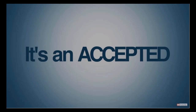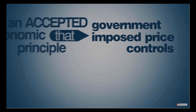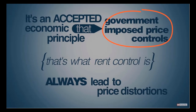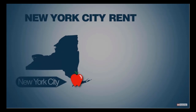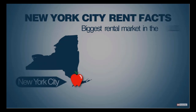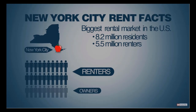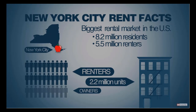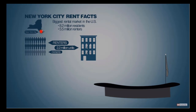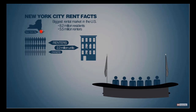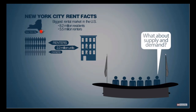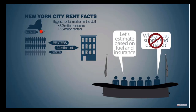Why the unanimity? Because it's an accepted economic principle that government-imposed price controls — and that's what rent control is — always lead to price distortions, in this case rents. This applies everywhere, but let's focus on New York City, the place where I have concentrated my research. New York has the biggest rental market in the country. Of the city's 8.2 million residents, 5.5 million rent, living in about 2.2 million apartments or rented houses. Every year, a city board votes on how much owners of rent-regulated apartments will be able to charge their tenants, basing decisions not on supply and demand, but on an estimate of how much costs such as fuel and insurance have risen, and of course how much of an increase voters will tolerate.